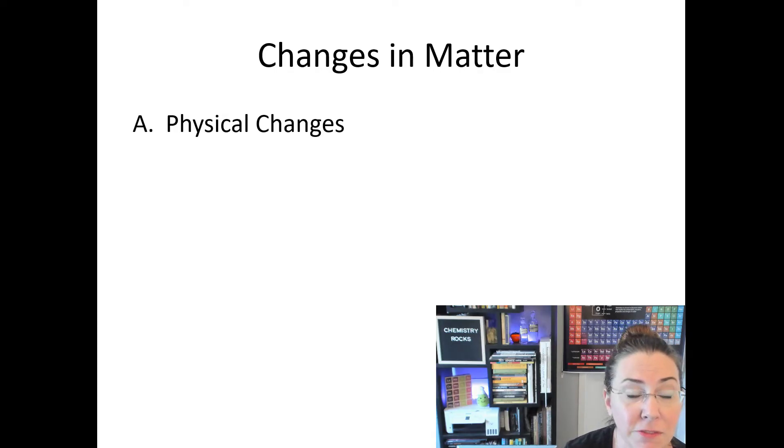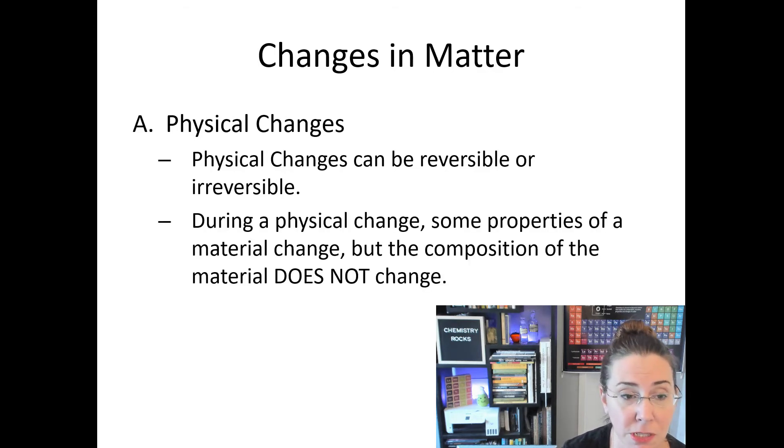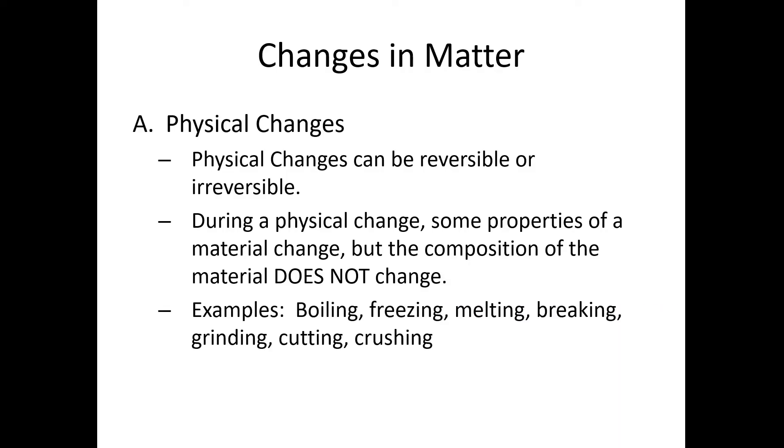So just like we have physical properties and chemical properties, we have physical changes and chemical changes. Physical changes are generally reversible, or some can be irreversible. During a physical change, some properties of a material change, but the composition or the makeup of the material does not change. For example, when we boil water, it's still water. Freezing. Same goes there. If you freeze something or change it from a liquid to a solid, it's still the original substance, just in a new phase. Melting. Likewise, it's a phase change. Phase changes, by the way, are all physical. If we take something and break it up, or grind it, or cut it, or crush it, we're not changing it into a new substance. We're just changing the way that it looks by breaking it into smaller pieces.